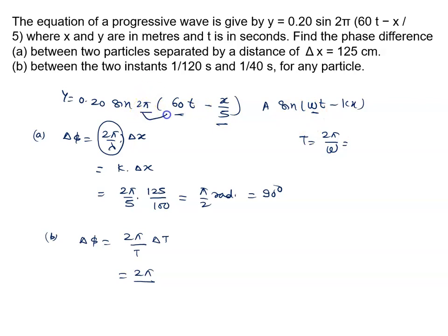Omega is 2 pi into 60 because 2 pi by T. So 2 pi upon 2 pi into 60. Then time period kitna hoga? 1 by 60.